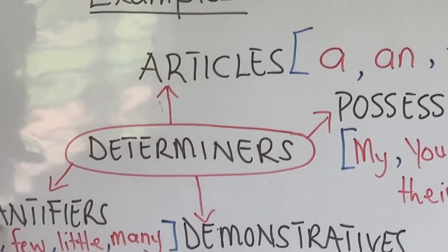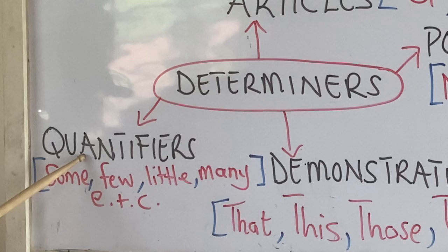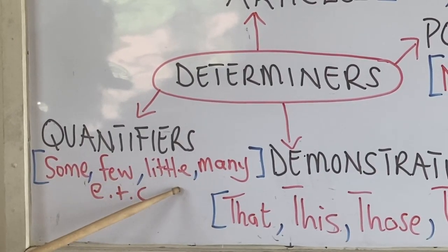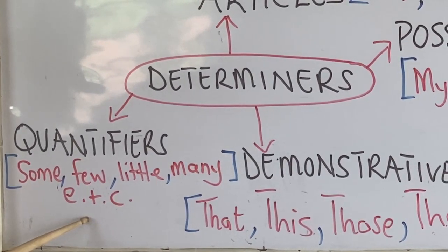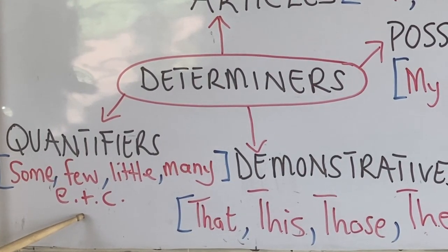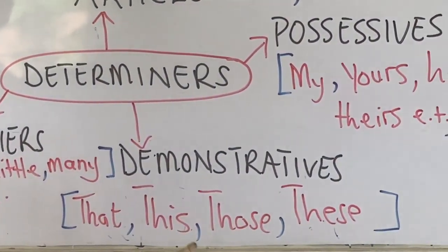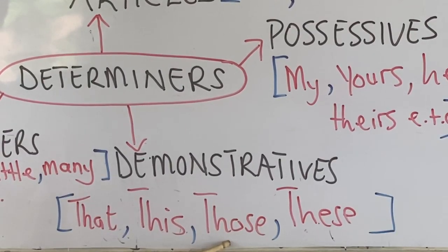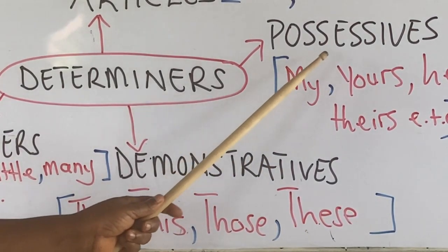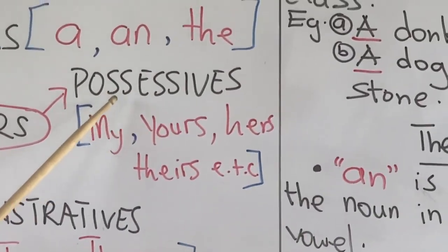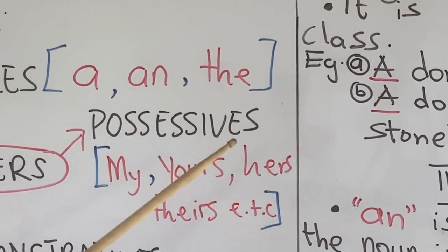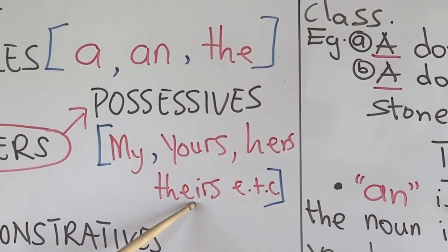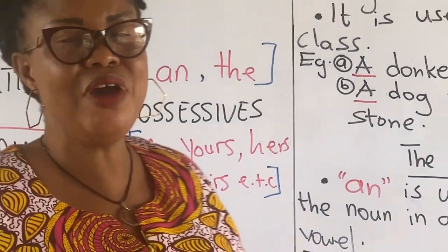We also have quantifiers — examples are some, few, little, many, etc. We have a whole lot of quantifiers. We also have demonstratives: that, this, those, and these. We also have possessives — they are all determiners. Examples of possessives are mine, yours, hers, etc. We have a whole lot of them.